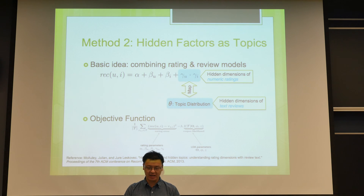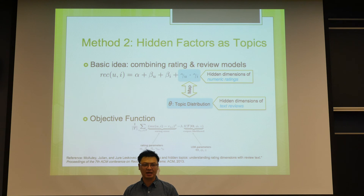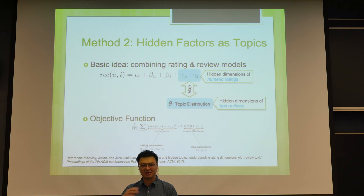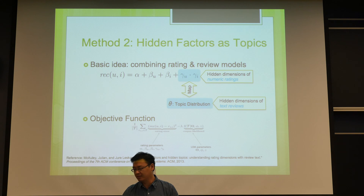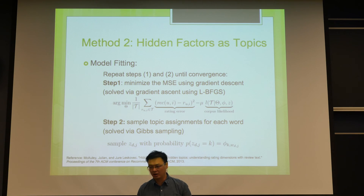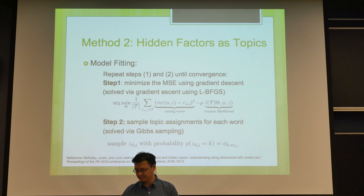Normally we would do this based on numeric ratings only, but these aspects are also encoded in the text reviews. We can discover them using topic analysis. The preferences and the properties are actually the topic distributions. In this way, we combine information from the numeric ratings as well as the text reviews into the objective function you see, and we optimize it by iteratively running two steps — minimizing and sampling — until convergence. For details you can refer to their paper; this is just a high-level overview.